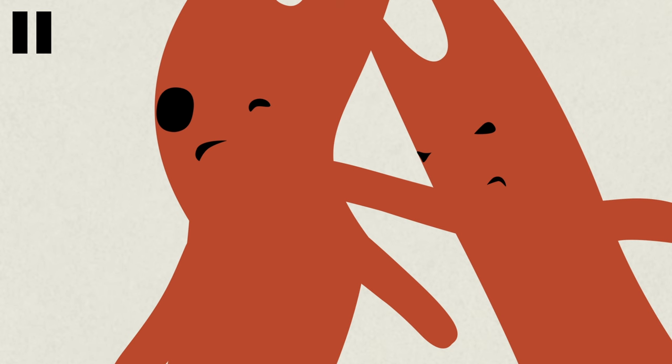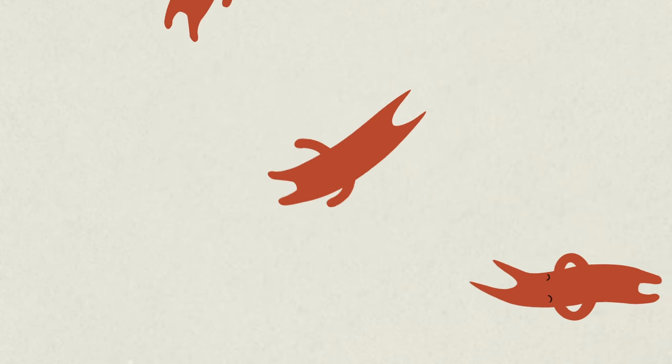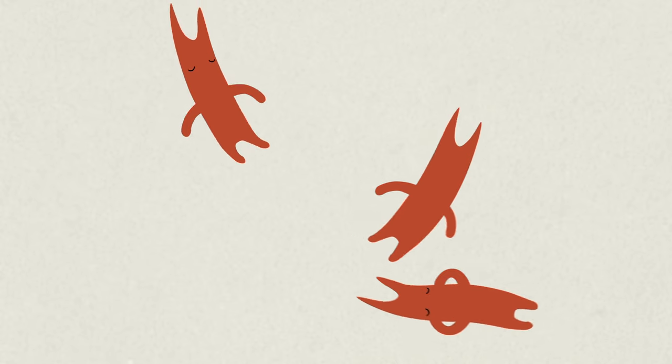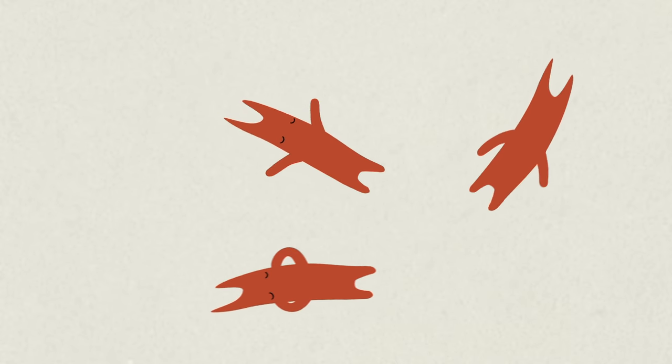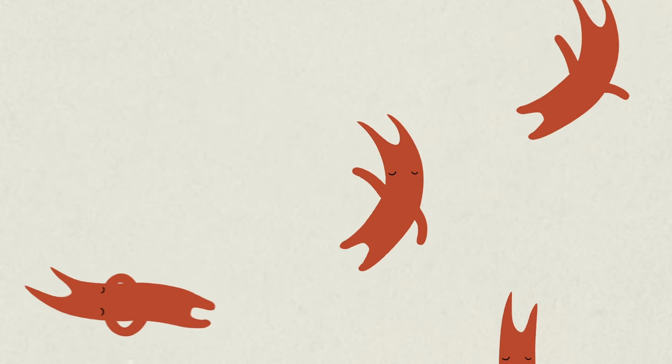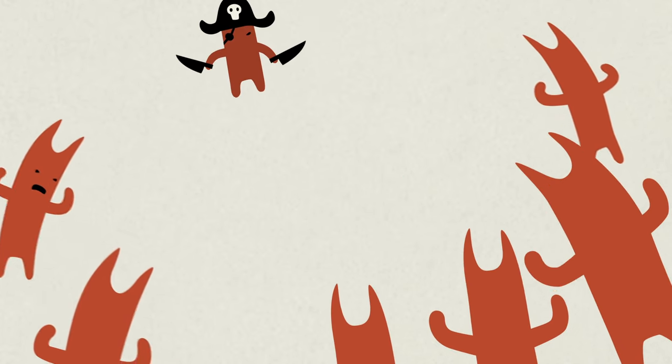But wait, why would RNA want to interfere with itself? Well, sometimes a cell doesn't want to turn all of the messenger RNA it creates into protein, or it may need to destroy RNA injected into the cell by an attacking virus.